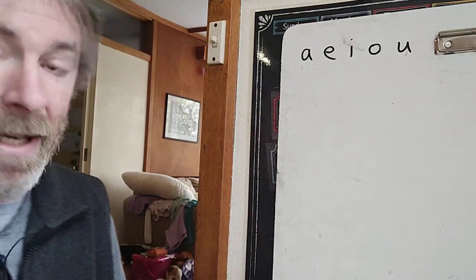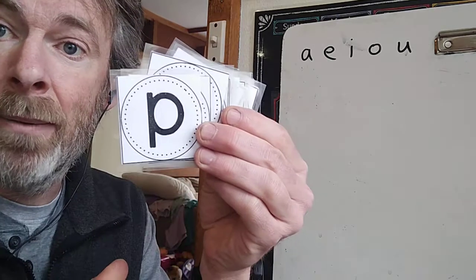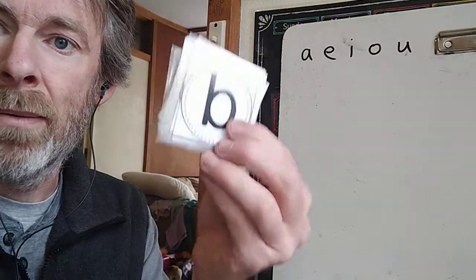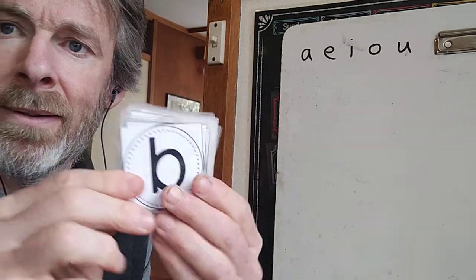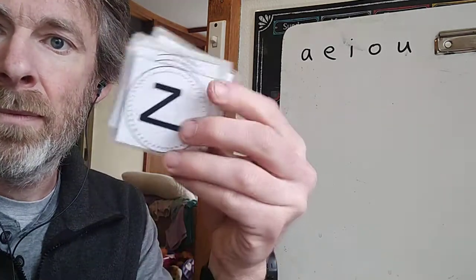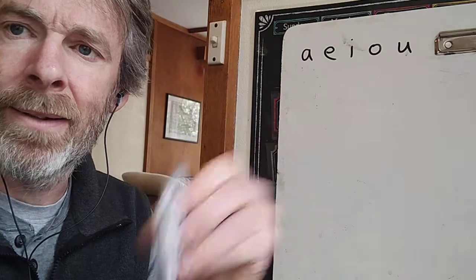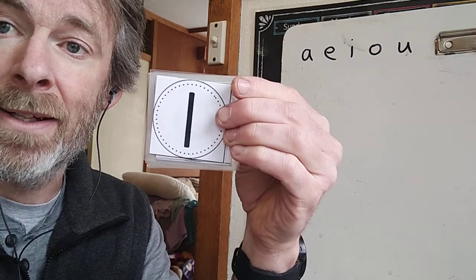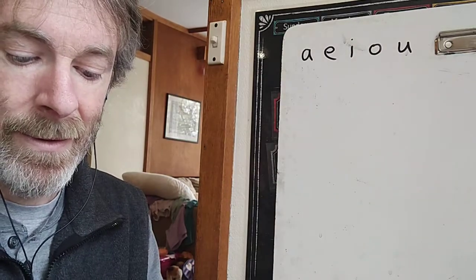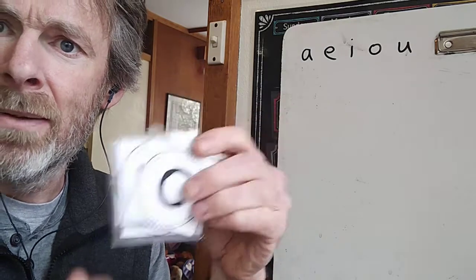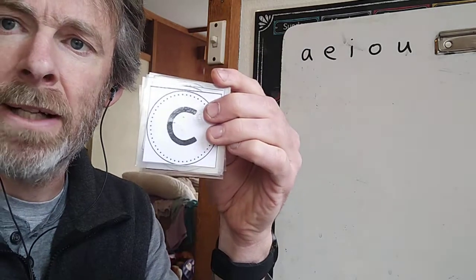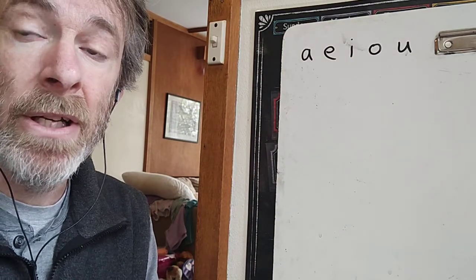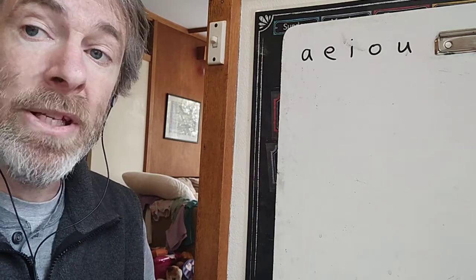So if I take out my bag of letters here, the first one on top — P — is that a vowel or a consonant? Consonant. B, vowel or consonant? Consonant. Z, vowel or consonant? Consonant. L, vowel or consonant? Consonant. C, vowel or consonant? Consonant. Most of the letters in the alphabet are consonants. There are five vowels and there are 21 consonants.